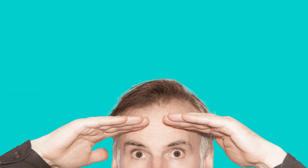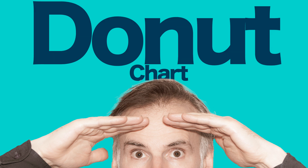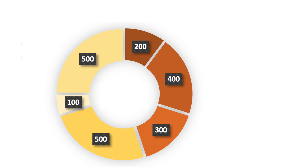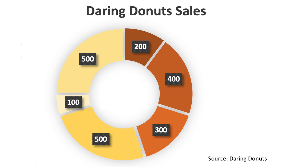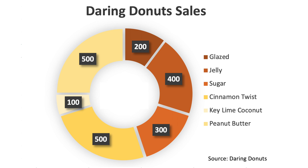To get a better understanding of how the two types of donuts sold this month, you thought, I'll make a donut chart. At the top of the chart is the title and the source of the data is on the bottom right. Also, a legend is needed to identify the different types of delicious donuts that make up the donut chart. And let's use the donut hole for the total number of donuts sold in a month.